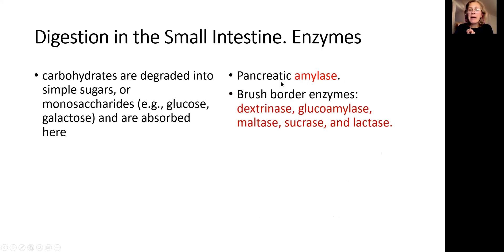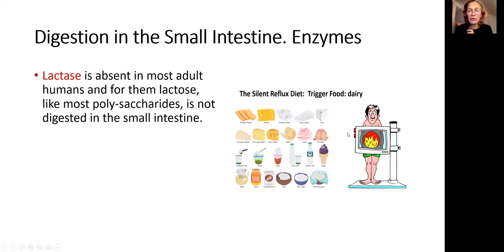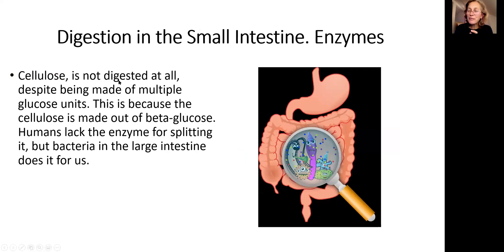Carbohydrates are broken down by pancreatic amylase and brush border enzymes: dextrinase, glucosidase, maltase, sucrase, and lactase. One more word about lactase — I already have a long video on the topic of not being able to digest dairy because humans lack lactase. It could be related to conditions such as eczema, psoriasis, or rheumatoid arthritis — please see that video. There are also products not digested by humans, like cellulose, because we don't have the enzyme. Cellulose passes through the small intestine and arrives in the large intestine.